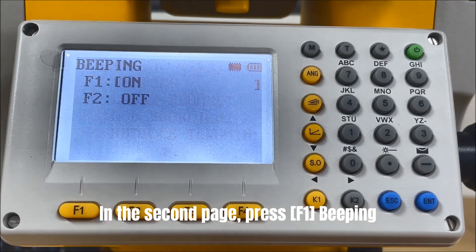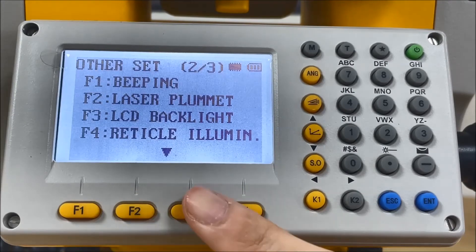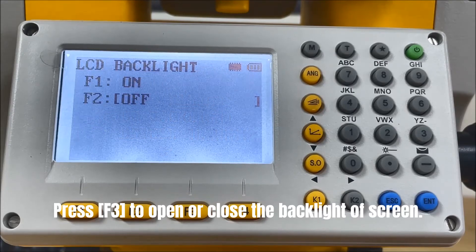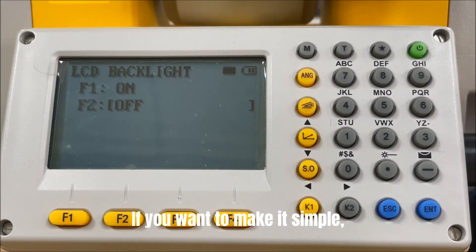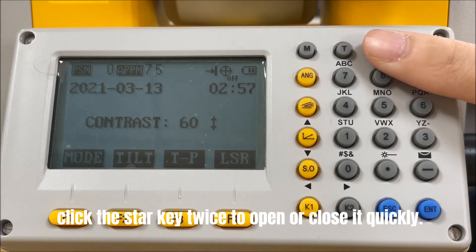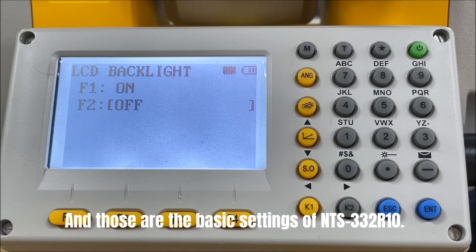In the second page, press F1 Beeping to open or close the beeping sound of the keypad. Press F3 LCD Backlight to open or close the backlight of the screen. If you want to make it simple, click the star key twice to open or close it quickly. And those are the basic settings of the NTS 332 R10.